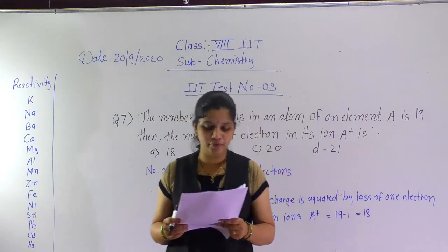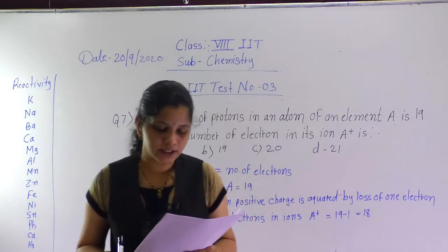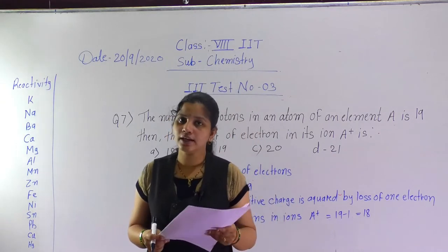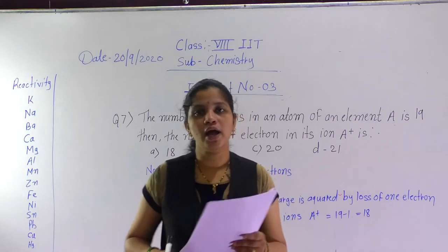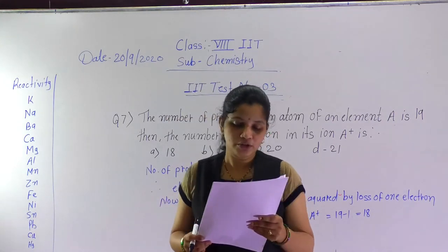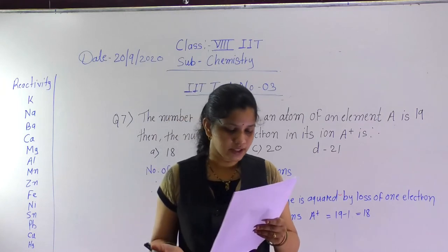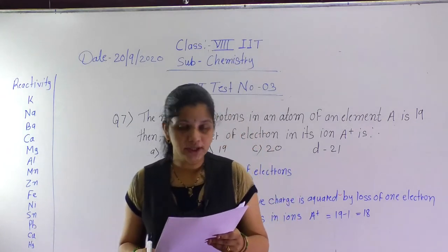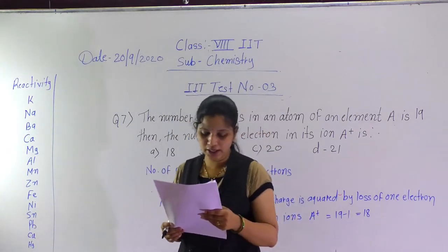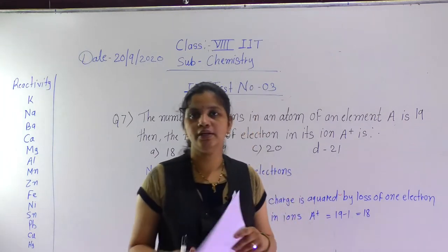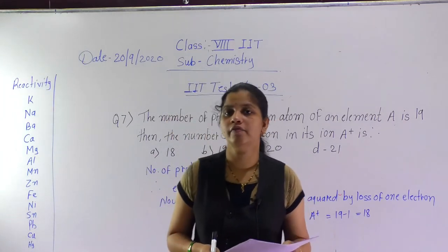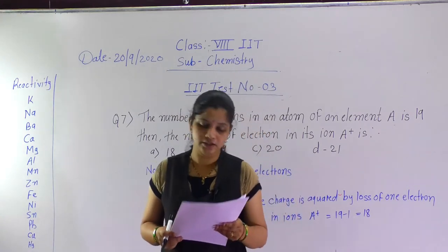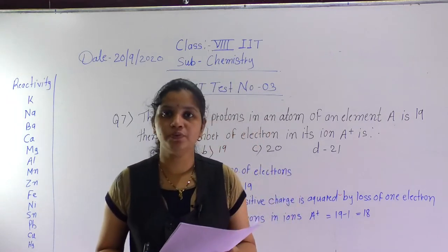Question number 4: which of the following properties is generally not shown by metals? The properties given are electrical conduction, sonorous in nature, dullness, and ductile. Metals are lustrous — they have shine. So dullness is not a property of metals. The correct option is C, dullness.